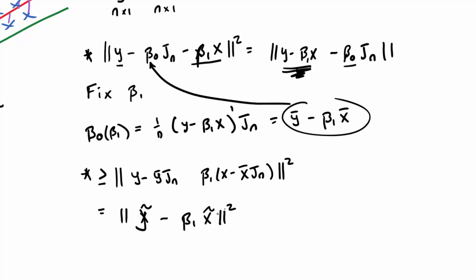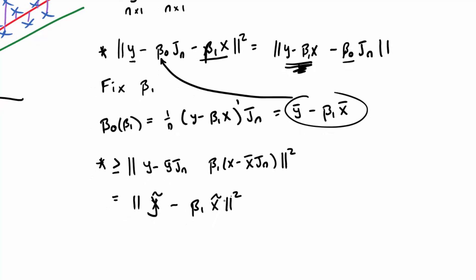Now this equation is merely regression through the origin with the new vectors y tilde and x tilde, and so we know that the solution has to be beta 1 hat equal to inner product of y tilde and x tilde over the inner product of x tilde by itself.